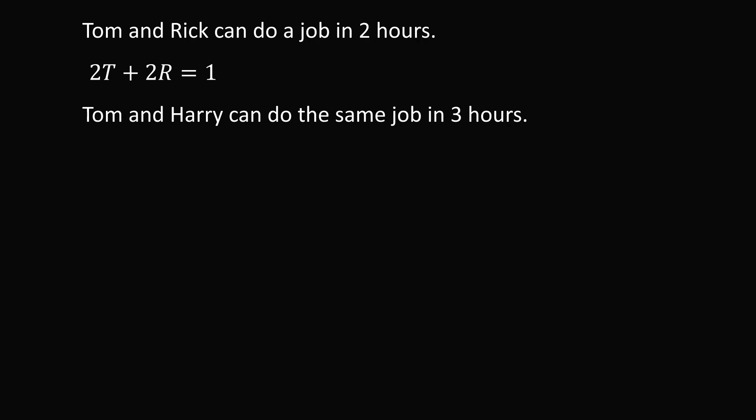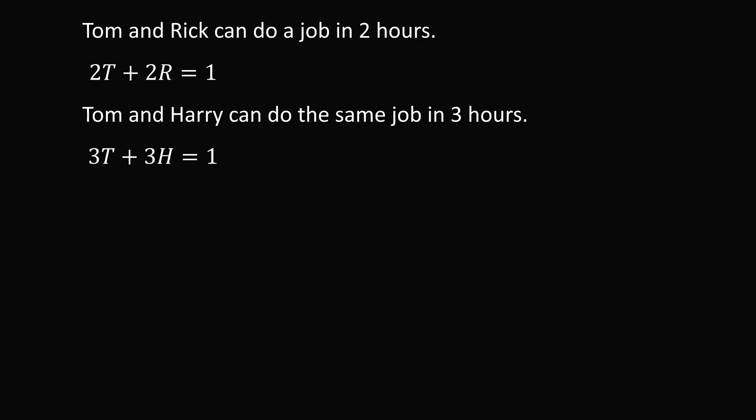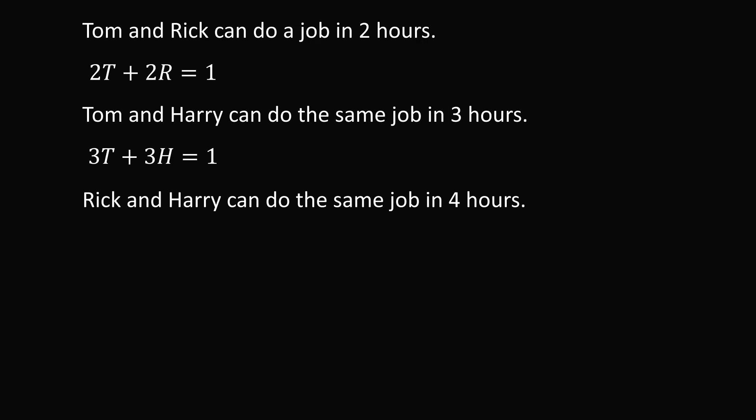Now the second sentence: Tom and Harry can do the same job in three hours. Applying the same logic, with h representing one hour of Harry's work, we get 3t plus 3h is equal to 1. Finally, Rick and Harry can do the same job in four hours, so 4r plus 4h is equal to 1.